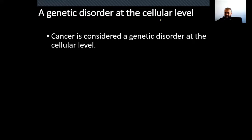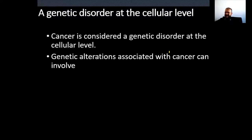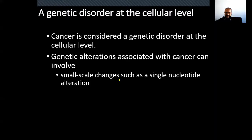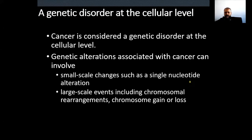We can say cancer is a genetic disorder at the cellular level — it is a disease of cells. Genetic alterations associated with cancer can involve small-scale changes, such as single nucleotide alterations — only one base on the DNA can change and that can cause cancer. We call these point mutations. Or they can be large-scale events such as chromosomal rearrangements, chromosomal gain, or chromosomal loss — collectively called chromosomal mutations or chromosomal abnormalities.